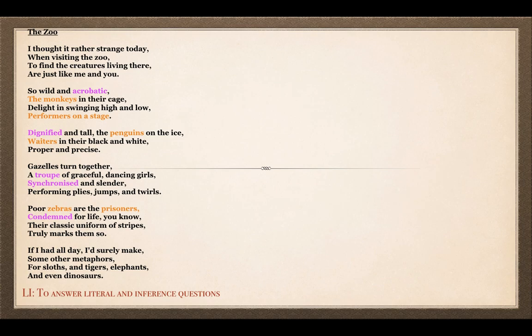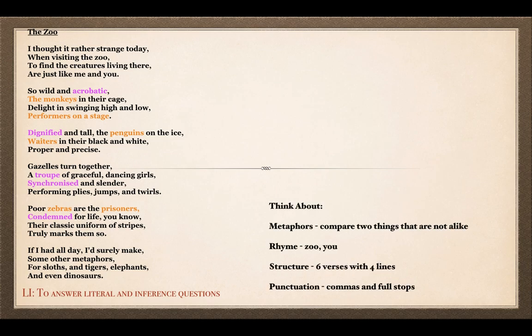That's our poem, all about animals in the zoo. The animals are being compared to people or people's jobs — this is where the metaphors come in. A metaphor compares two things that are not alike. In verse two, the monkeys are being compared to performers on a stage. Monkeys are not performers on a stage, but it's a way of showing the qualities that they have. In verse three, the penguins are being compared to waiters.